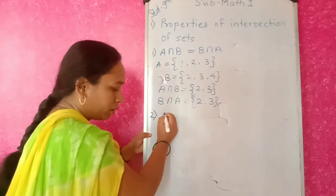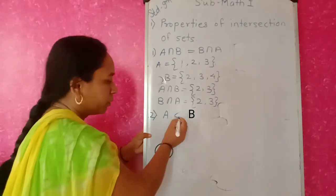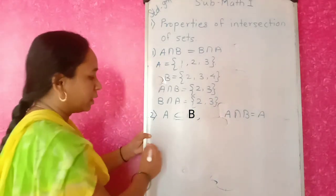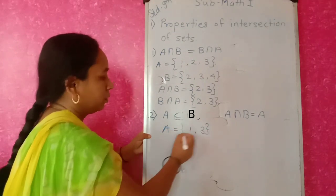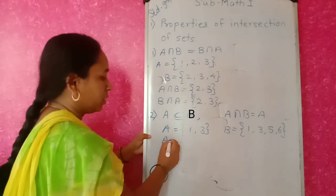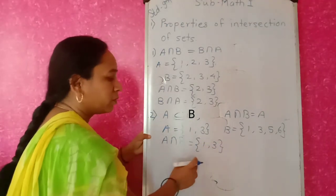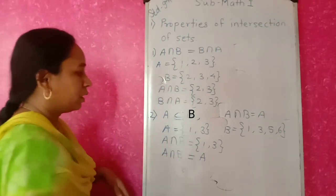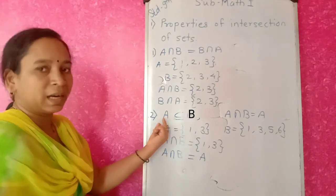Second property: if A is a subset of B — that is, all elements of A are in B — then A ∩ B = A. Consider A = {1, 3} and B = {1, 3, 5, 6}. A is a subset of B. A ∩ B: the common elements are 1 and 3, which are exactly the elements of set A. So A ∩ B = A. This proves the second property: if A ⊆ B, then A ∩ B = A.